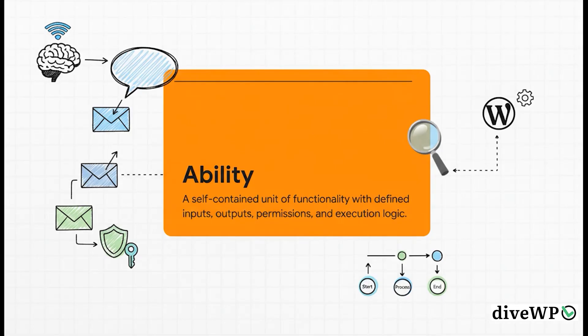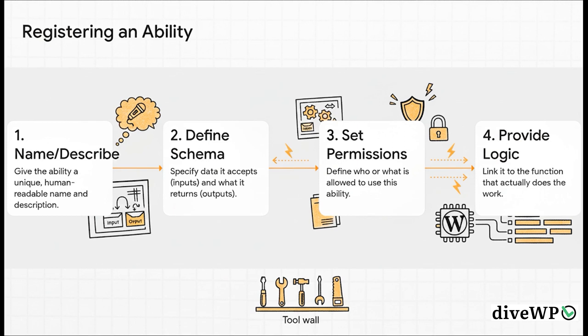The core concept here is this thing called an ability. An ability is basically a neat, standardized little package. It takes a piece of functionality — like, say, publish a post — and bundles it up with everything an outside system needs to understand it: what information it needs to start, what it's going to give back, and, super importantly, who's allowed to use it. It turns a random bit of code into a clear, machine-readable action. Registering one of these abilities forces developers to be incredibly clear and structured. You give it a name, define its inputs and outputs, set the permissions for security, and then point it to the code that does the actual work. It's a simple four-step process that creates that clean, organized tool wall.